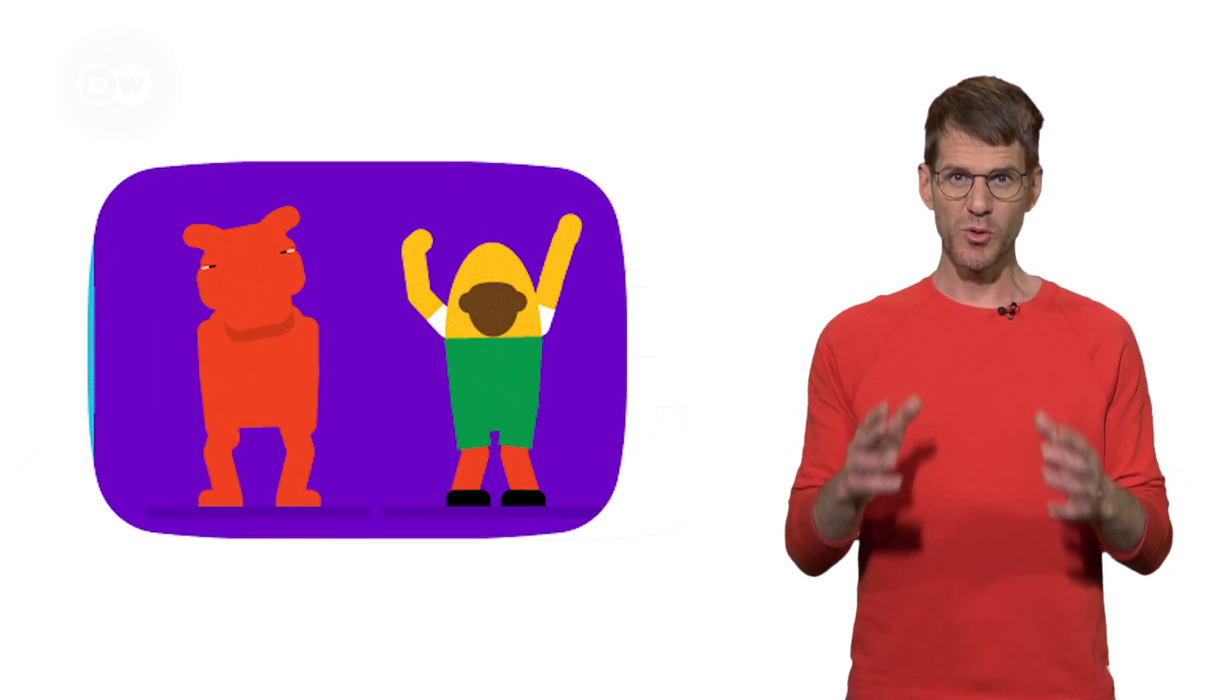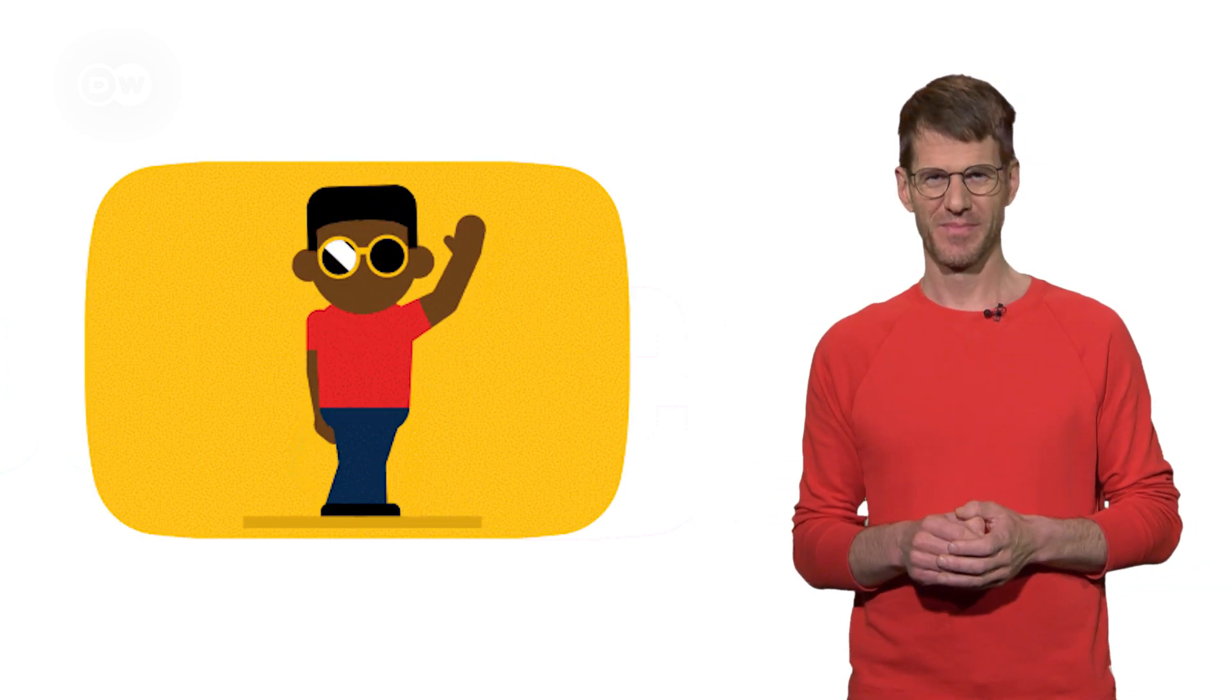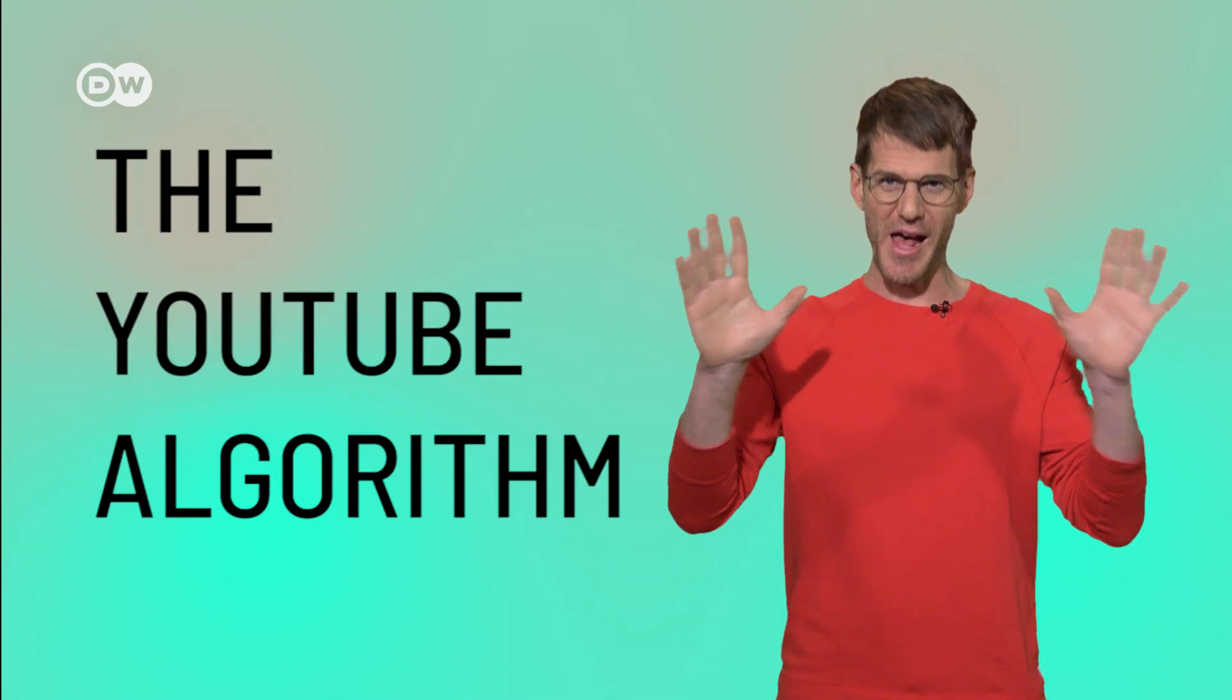It determines what's shown to us on YouTube, so it determines what we see and what we don't see. It's very likely that you're watching this video just because of it. It is the YouTube algorithm.